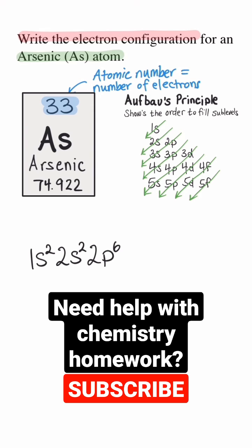And then 3s, that's another s sublevel, so that's 2 electrons again. So the next arrow, we get the 3p. That's 6 electrons.